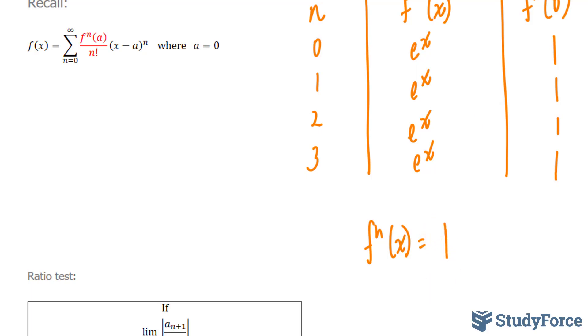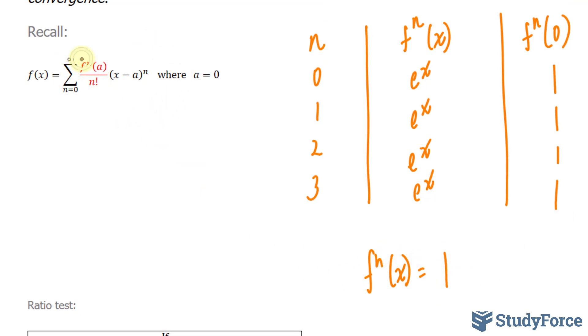And of course, if we match this to what the general formula looks like, I can replace this part, which I have set a is equal to 0, to 1. So I have 1 over n factorial x to the power of n. This right here represents the general formula for e to the power of x.